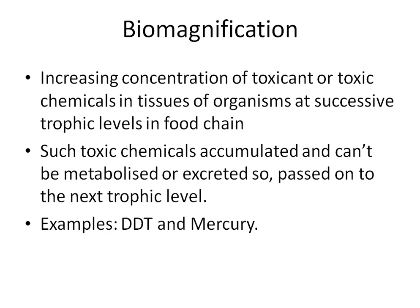The next topic is biomagnification, from chapter 16 of the biology book. It is the increasing concentration of a toxicant or toxic chemicals in the tissues of organisms at successive trophic levels in a food chain. Such toxic chemicals accumulate and cannot be metabolized or excreted, so they are passed on to the next trophic level.